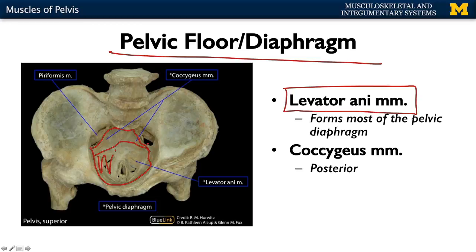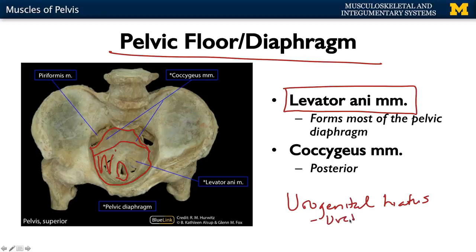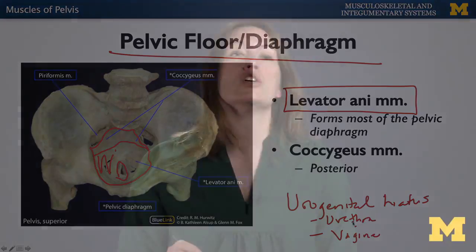Before we get into that further, let's talk about what's referred to as the urogenital hiatus. What's going to be going through there? Very importantly, you're going to have your urethra, and then in females, you'll have the vagina. These muscles are going to be surrounding this region and can play a sphincteric role — they can close this region. This is very important in terms of urinary stress incontinence; a weakening of these muscles can play a role in urinary stress incontinence.